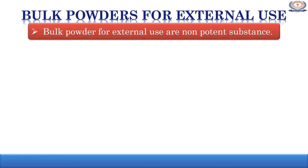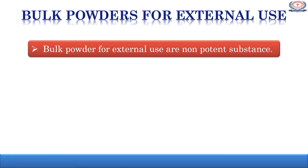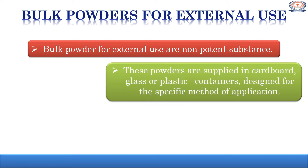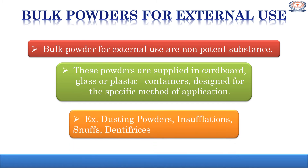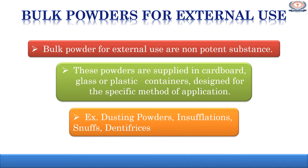The next class is bulk powders for external use. These are mainly non-potent type of substances. These powders are supplied in cardboard, glass, or plastic containers, which are often designed for the specific method of application. Various examples of bulk powders for external use are dusting powders, insufflations, snuffs, and dentifrices. We will discuss about all four types in detail.